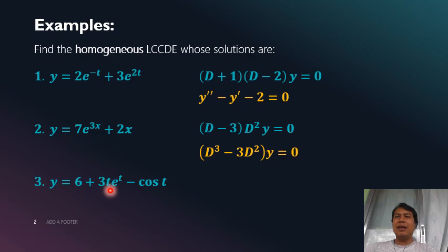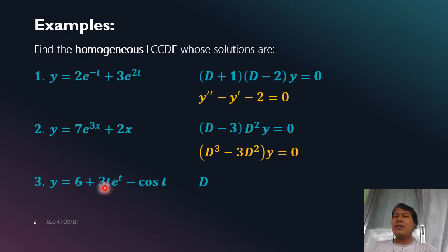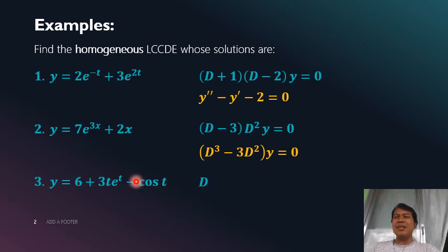For the last example, we have y = 6 + 3te^t - cos(t). The constant term corresponds to a root of zero, so we must have a factor D in the DE. For the second term, 3te^t, we have a power function t multiplied by an exponential — this means a root of positive 1. Since the term has a multiplier t, the root 1 is a double root, so we square (D - 1) to get (D - 1)².